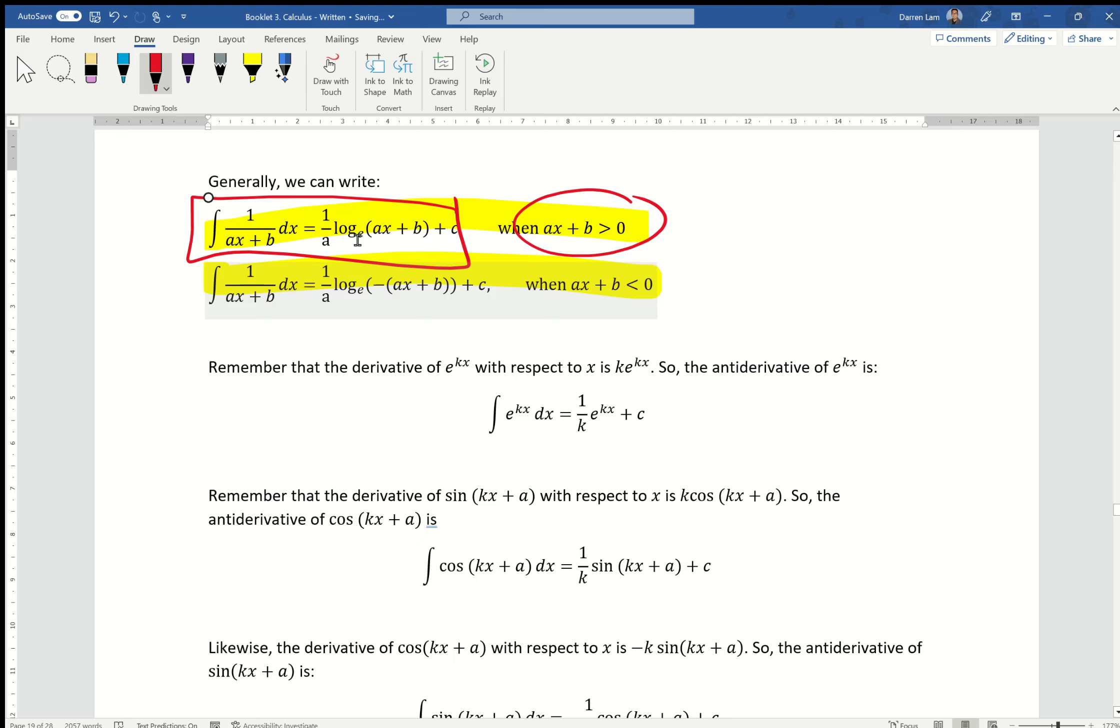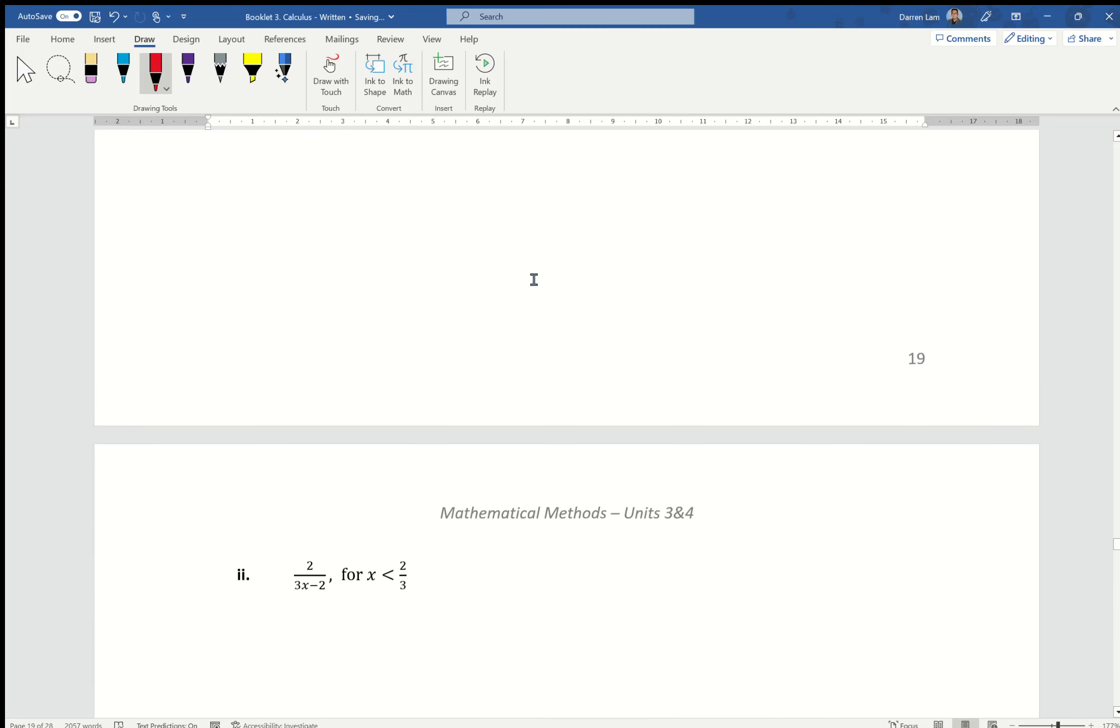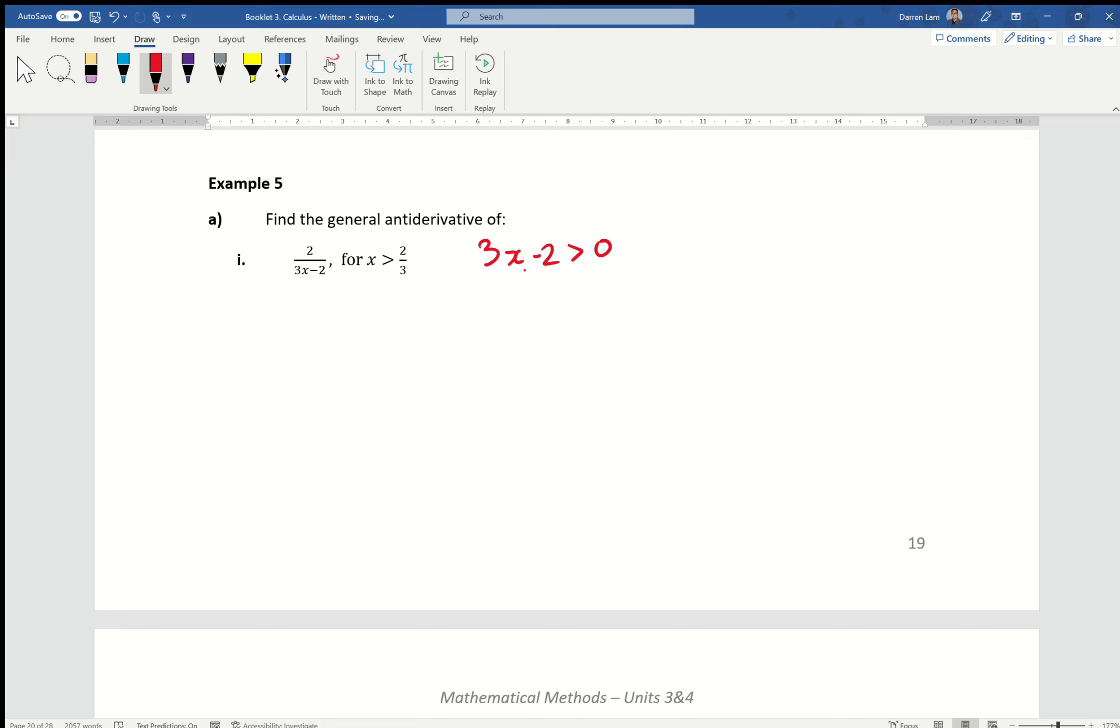Once you've got it, it's just 1 over the coefficient, ln, and then the function plus c. So in this example, it's just going to look like, and if I write the antiderivative of 2 over 3x minus 2 dx, it's going to equal to 1 over 3, because that's the coefficient, and then multiply by the natural logarithm of 3x minus 2 plus c. That's it. Hopefully that helps.